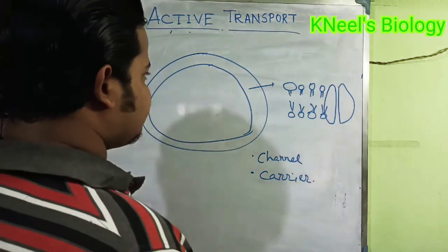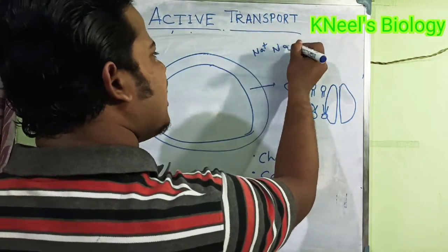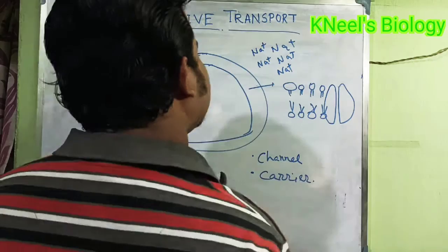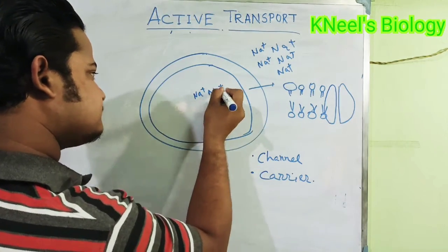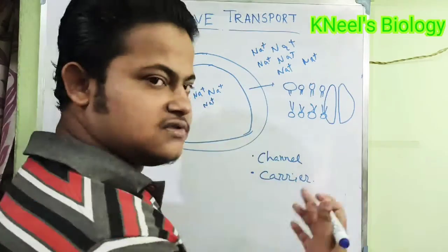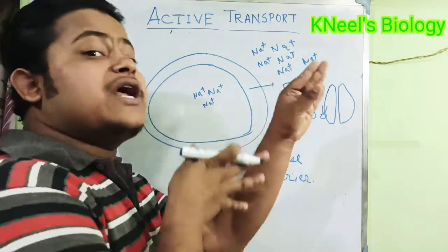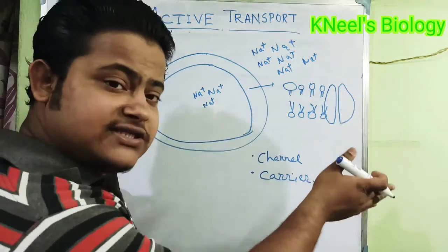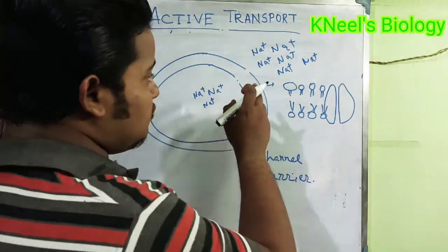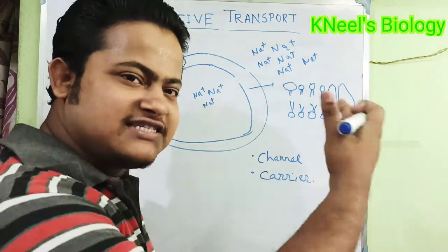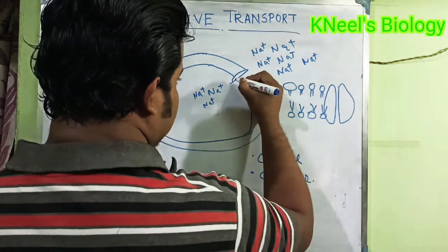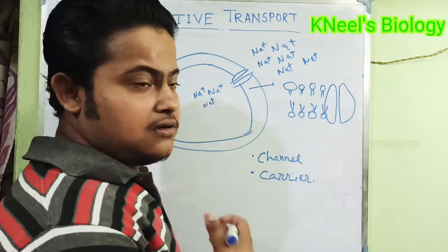Let's assume sodium concentration is very much higher outside the cell, and inside the cell there is a lower level of sodium ions. But the cell needs to transport sodium from inside to outside. There is a protein that helps sodium ions transfer from the intracellular region to the extracellular region. This transporter protein is called the sodium-potassium ion transporter.